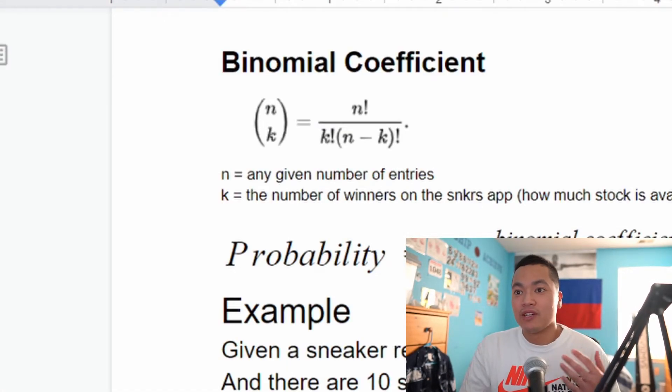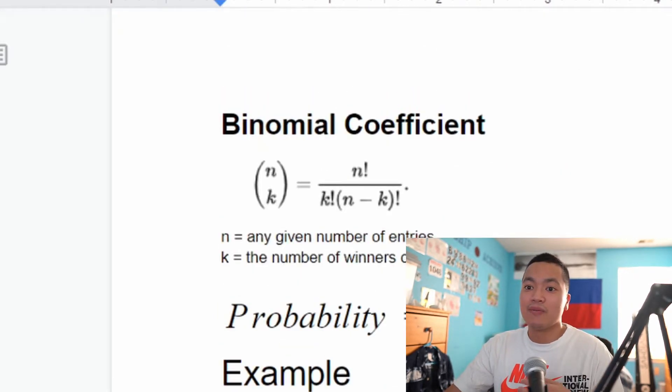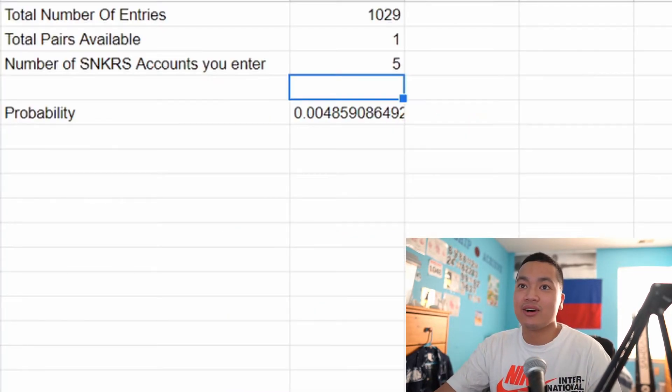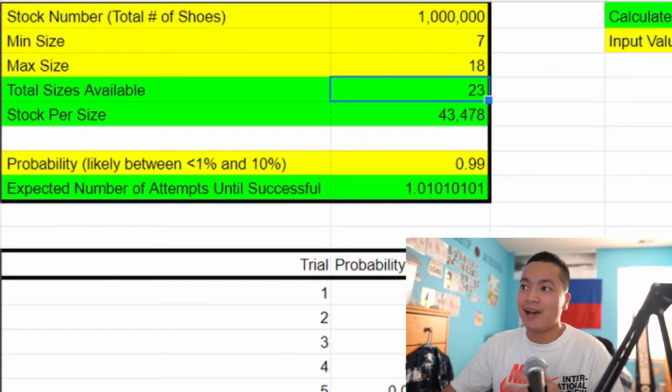That pretty much breaks down my formula for probability. Now you have to take this with a grain of salt because it's very difficult to actually calculate this. We're doing a lot of assumptions and for that reason when we look at expected value we're just gonna have to play around with the probability. We don't know how many people are going to enter a release every single time and we don't know how many shoes are going to be available in each size every single time. So that alone makes it just too variable and it's very difficult to calculate that. Maybe some PhD student has it all figured out but definitely not me.